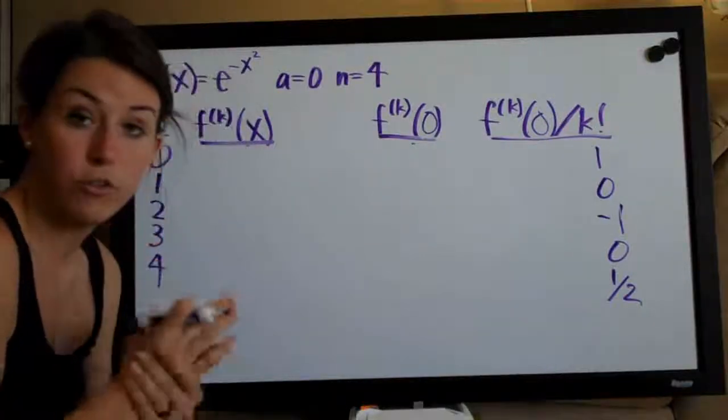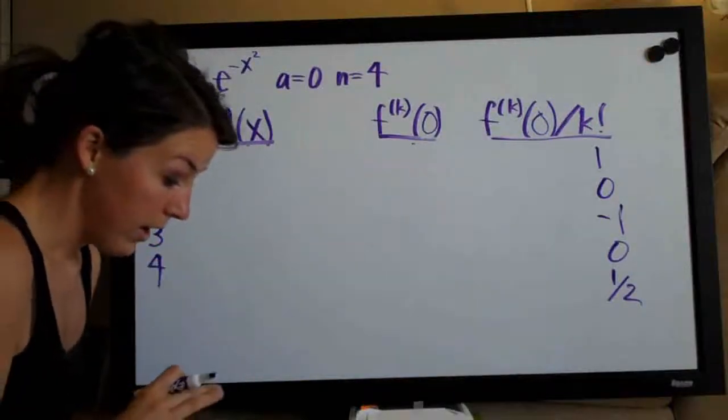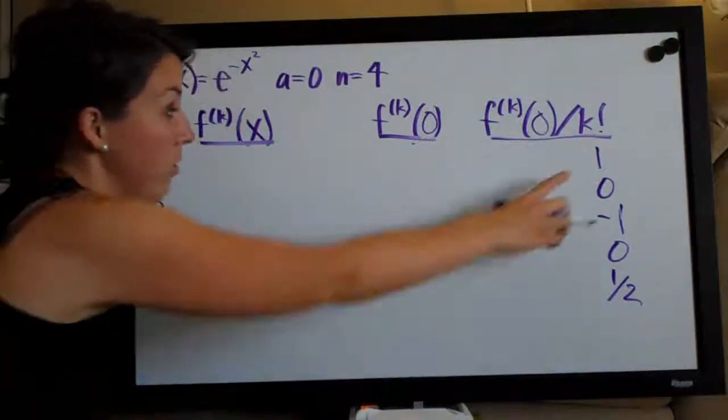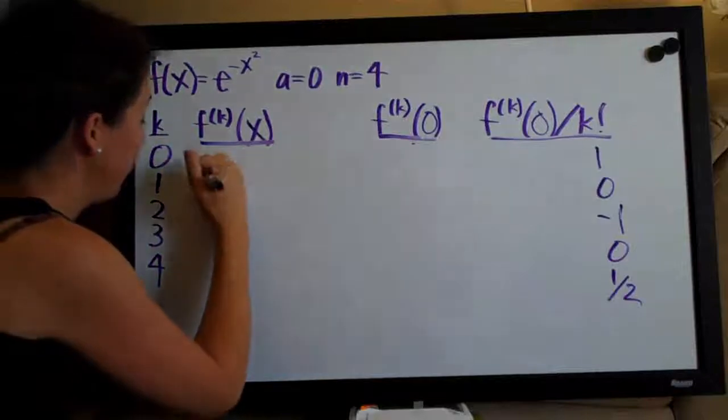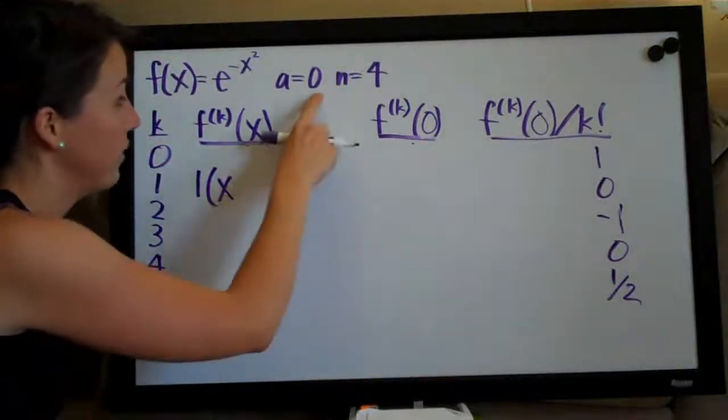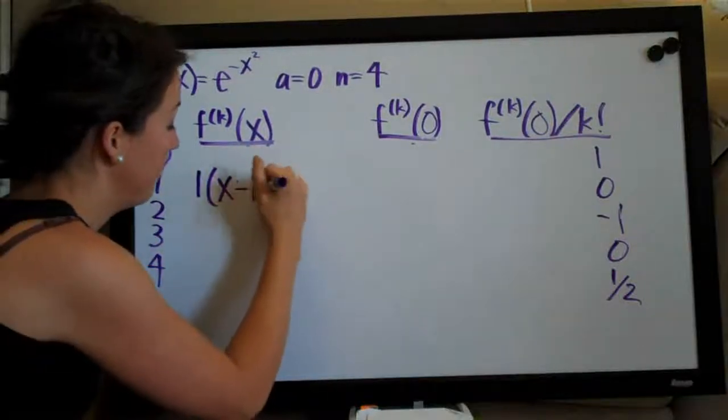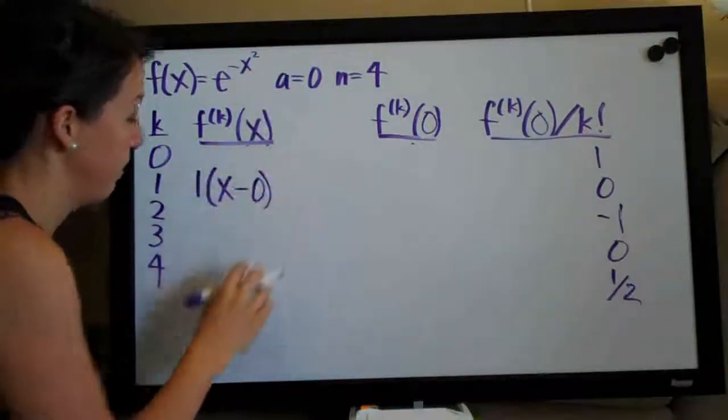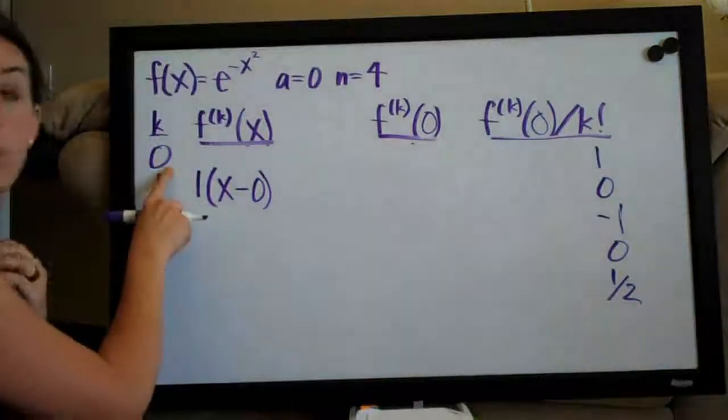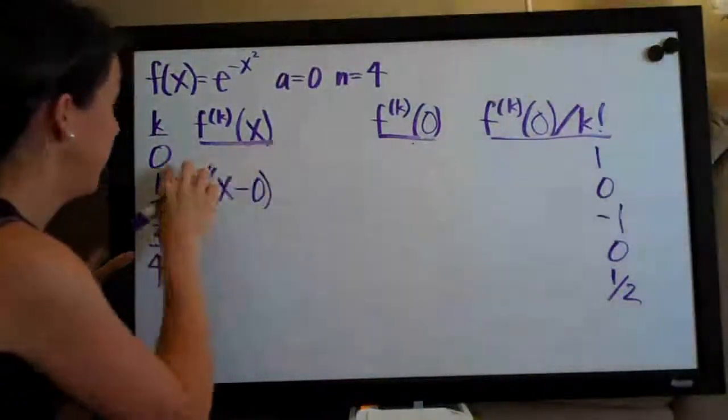So, Taylor polynomial is super easy to construct. These are our coefficients. So, we start with the first one. We do one times x, always. And then we subtract whatever a is. So, one times x minus zero, because a is zero. And then we raise that to the corresponding value of k. So, in this case, zero. Then our second term would be zero, the coefficient, times x minus zero, because a is zero, raised to the one.